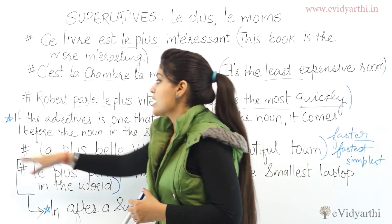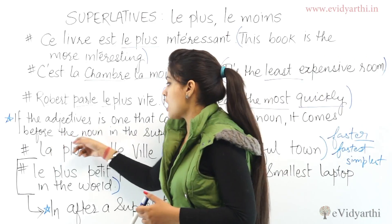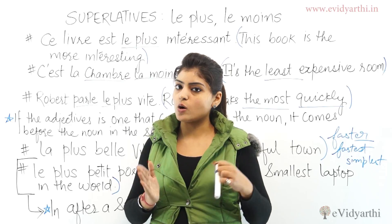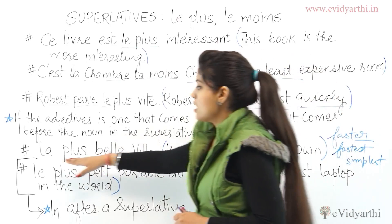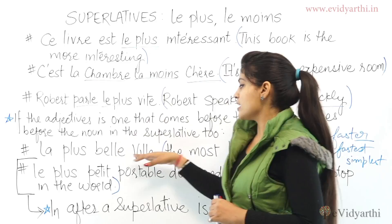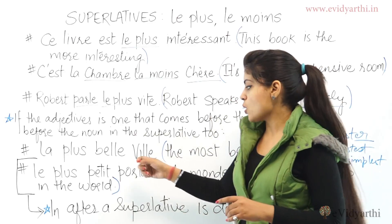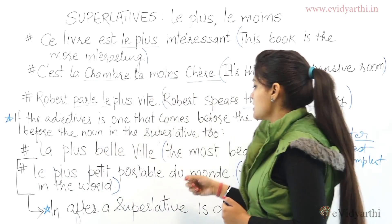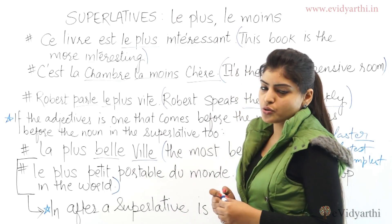The next rule: if an adjective comes before the noun in normal usage, it also comes before the noun in the superlative. For example, 'la plus belle ville' means the most beautiful town. 'Belle' means beautiful and 'ville' means town. 'La plus' is again the superlative.